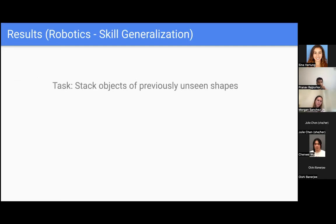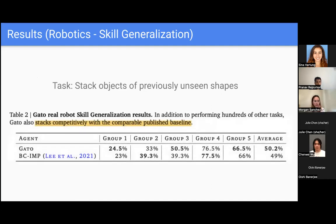They also show results for robotics, specifically the task of skill generalization. The agent is asked to stack objects of previously unseen shapes — they withheld some shapes from the training set and then evaluated performance. They show that the agent was able to outperform existing benchmarks on a number of groups of unseen shapes. For groups one, three, and five, Gato is actually winning or pretty comparable, and on average it's pretty comparable to the baseline.